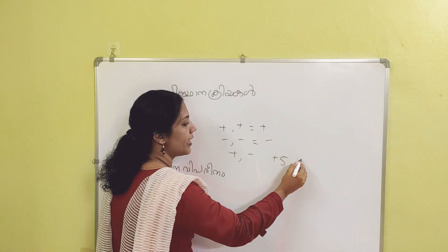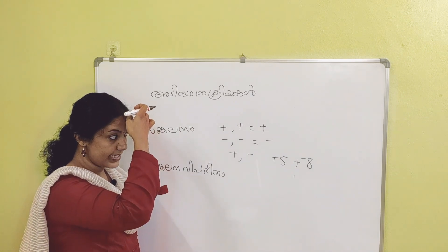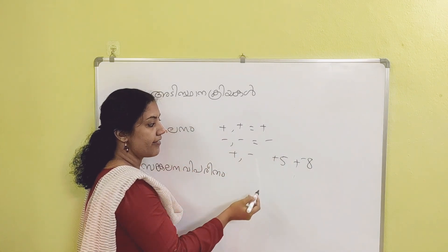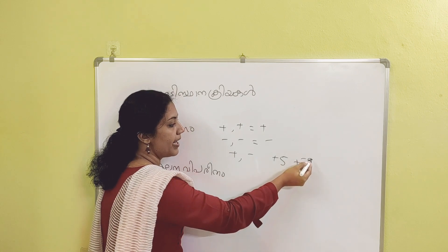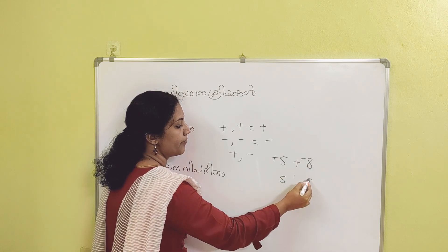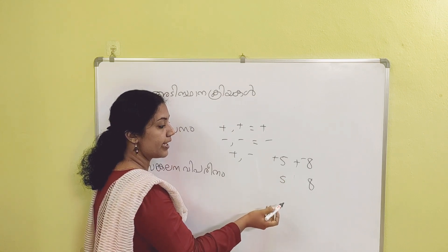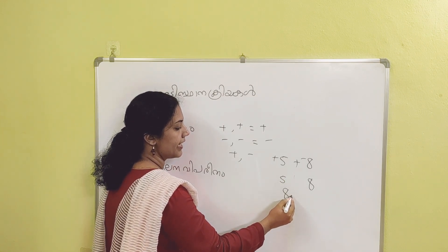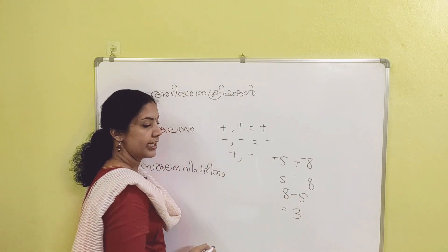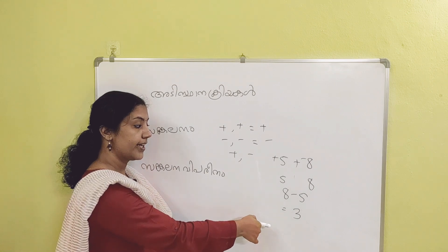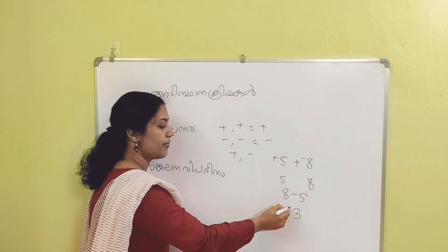We call this plus 5 and minus 8. What do we call this — negative things and positive things? The same thing as positive, the other kind is negative. What is negative 2? Minus.